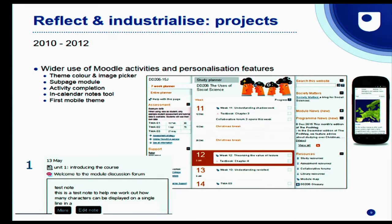We took the opportunity to uplift the graphic design. Course teams had a little bit of extra flexibility — they could change a colour from a small palette and control which image went at the top. Around this time, we also added a significant amount of personalisation — completion checkboxes allow people to mark off how they're progressing, or that can be automated depending on the activity. We also had a note-making tool that we've since retired, which allowed people to make notes directly in the study planner and the course homepage.